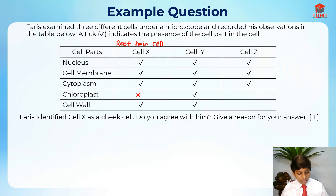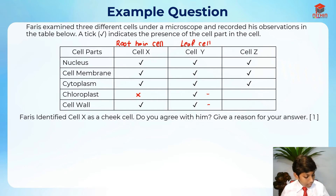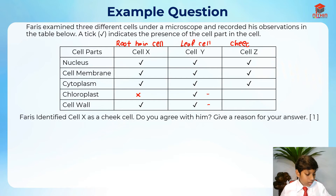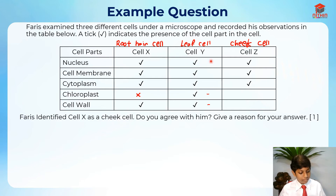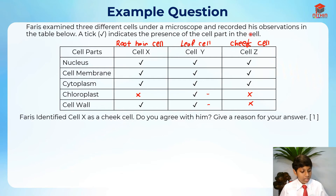Cell Y has all the cell parts including the cell wall and chloroplast, so it should be the leaf cell from the plant. Cell Z only has the nucleus, cell membrane, and cytoplasm — so it should be a cheek cell from an animal. It does not have a cell wall or chloroplast, which is why it's an animal cell.